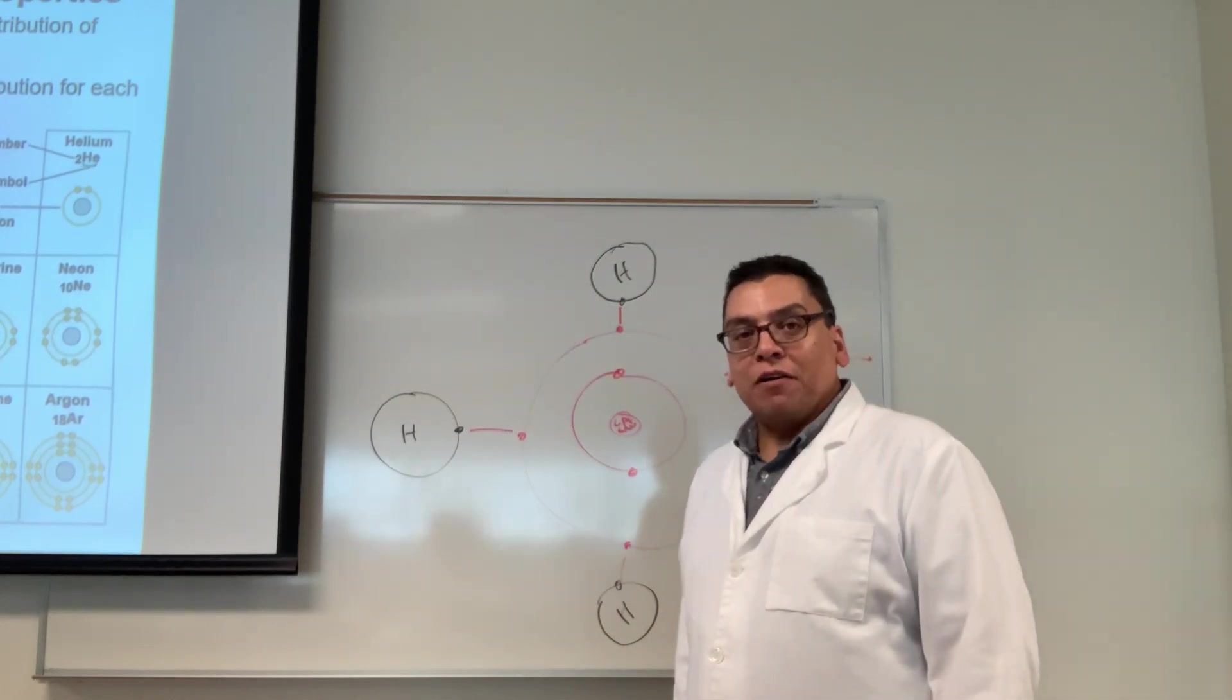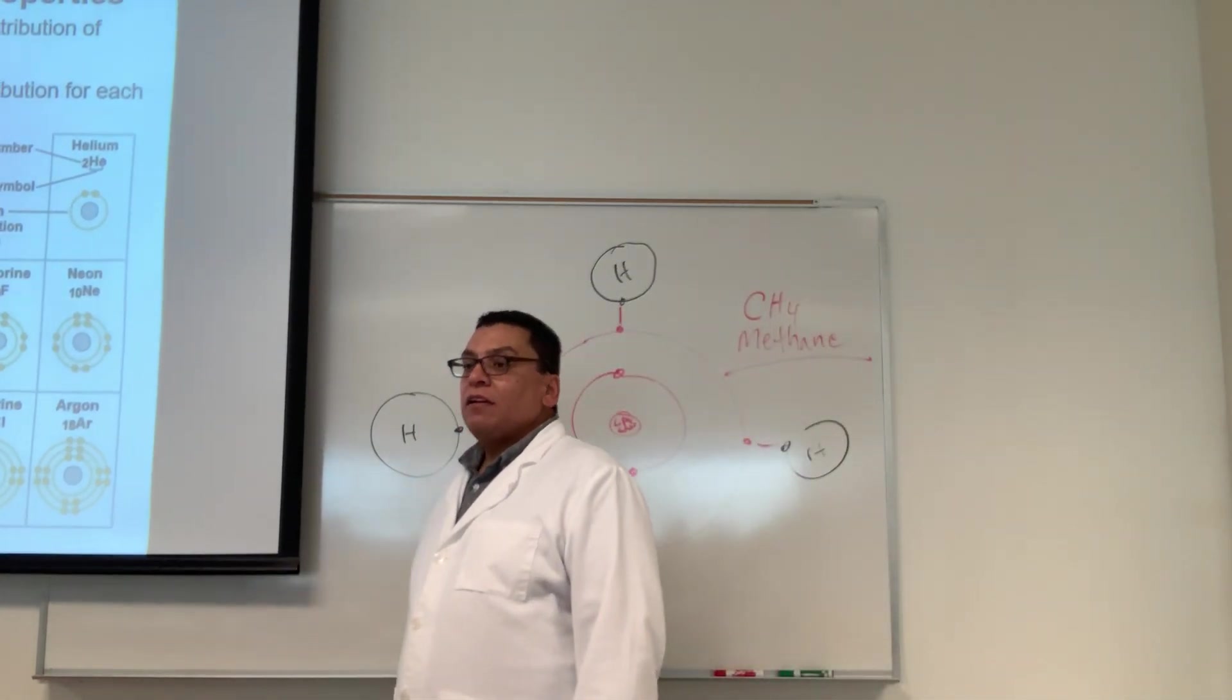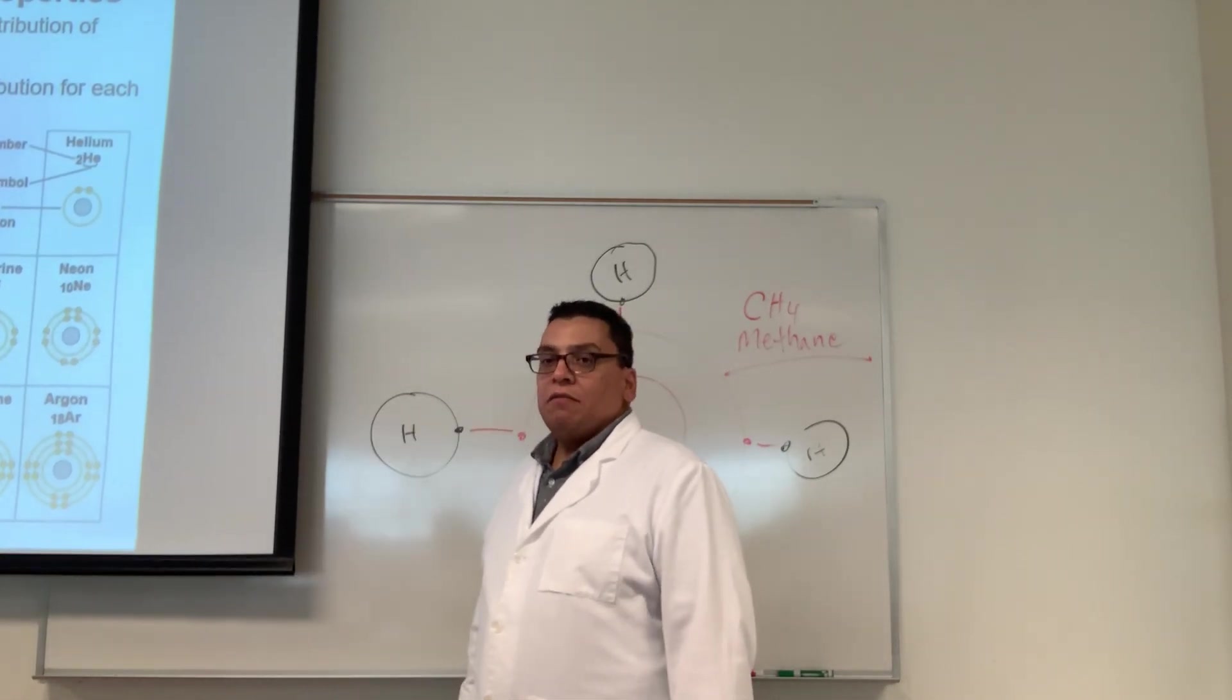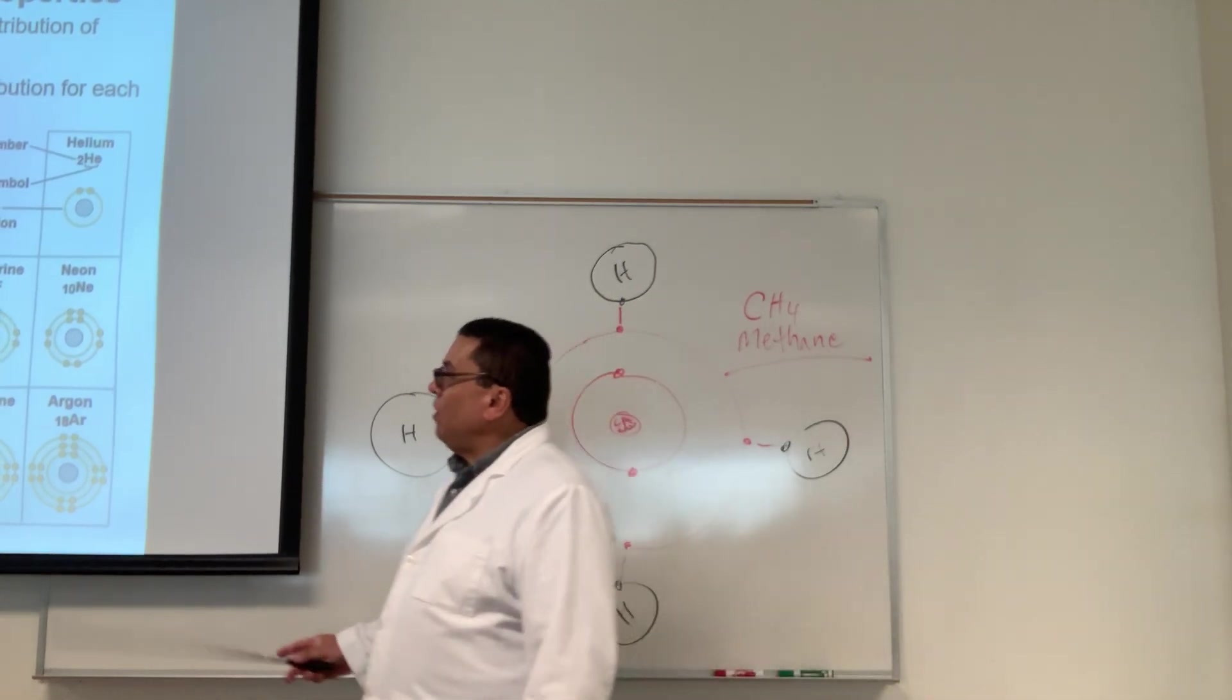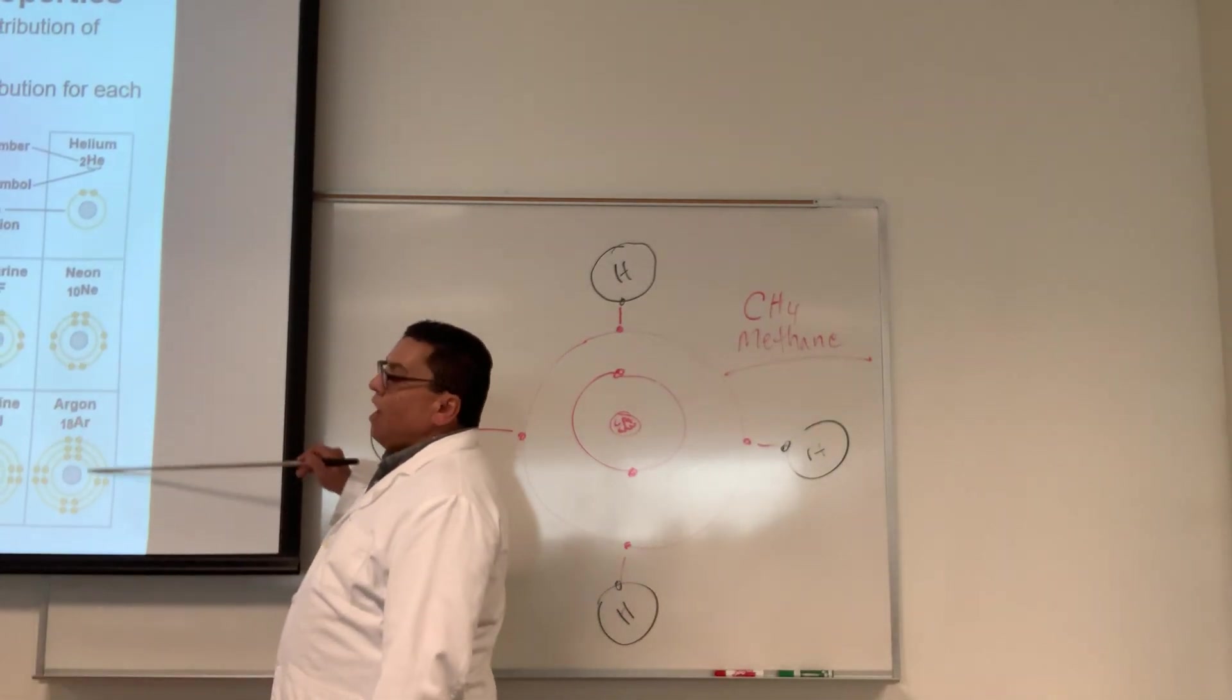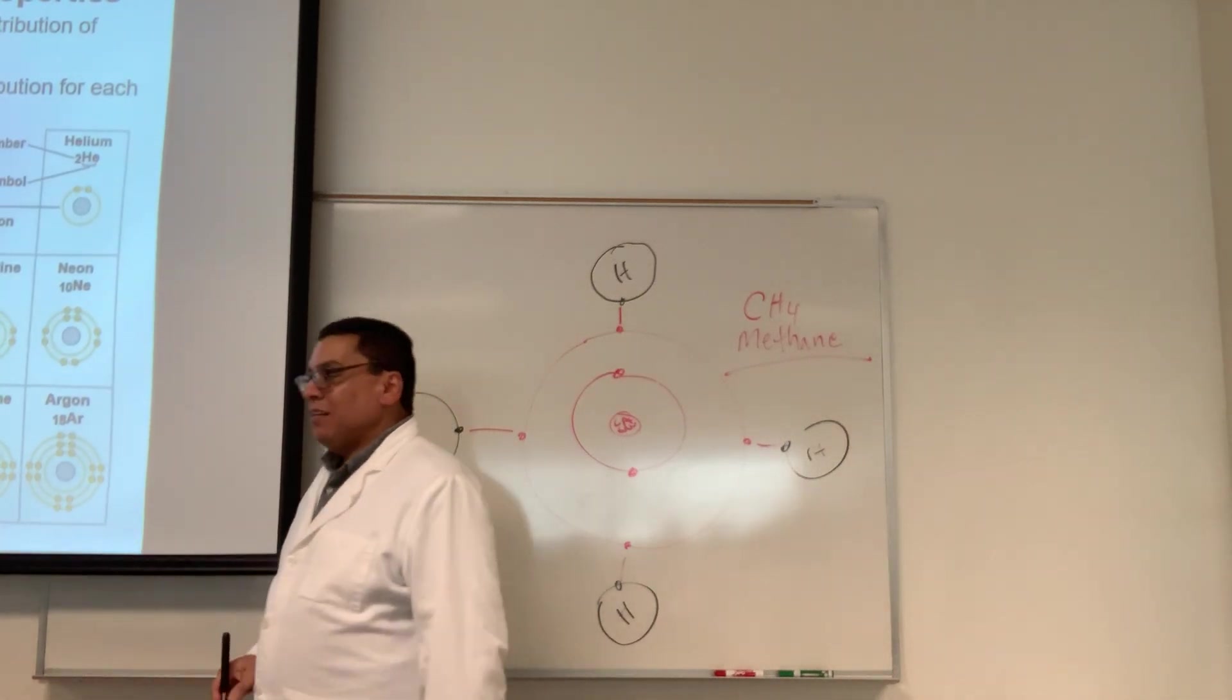Neon doesn't need to look for electrons; its octet rule is already satisfied. Neon is non-reactive, helium is non-reactive, argon is non-reactive because their octet rule is already satisfied. Elements from this way are reactive; these guys tend to be non-reactive.